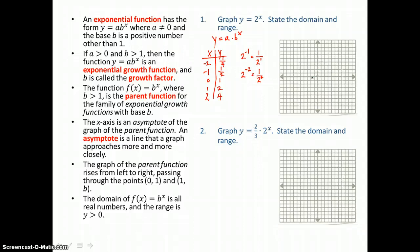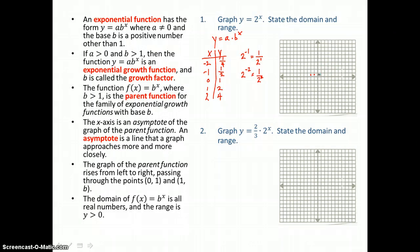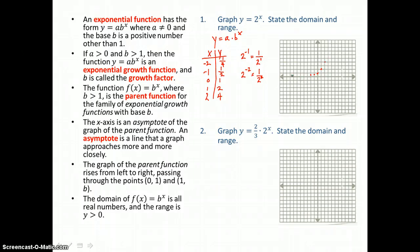Now we'll graph these ordered pairs: negative 2, 1 fourth — close to the x-axis; negative 1, 1 half — moving a little further from the x-axis; 0, 1 is our y-intercept; 1, 2 in the first quadrant; and 2, 4. When I draw this curve, it follows the x-axis, then makes a sharp turn at the y-axis, and increases rapidly after that — exponential growth.